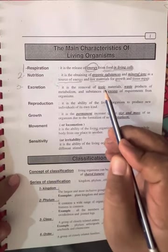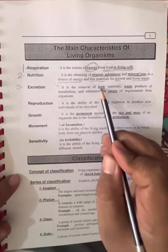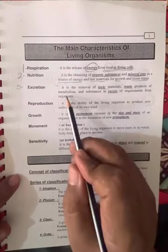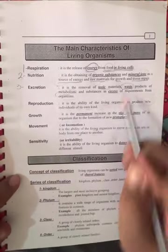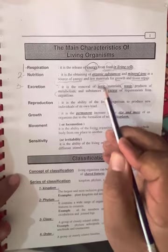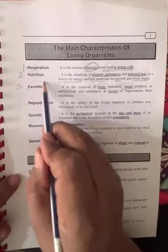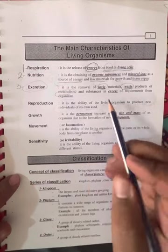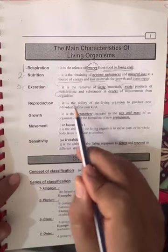It's the removal of toxic material and waste products of metabolism. The metabolism produces waste and toxic material. Those wastes and toxic materials should be secreted and removed from inside the cell. Reproduction: it is the ability of living organisms to produce new individuals of the same kind.